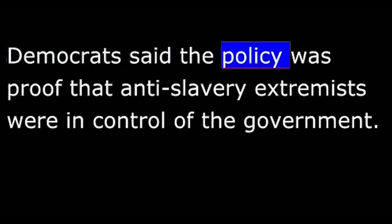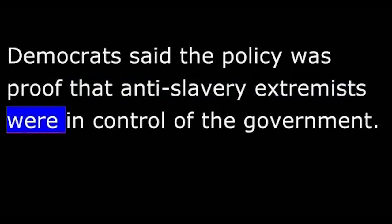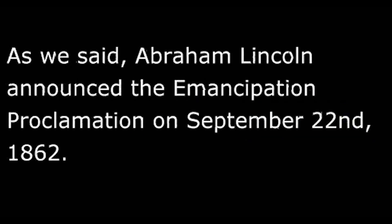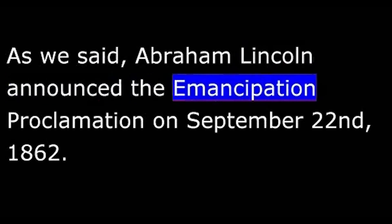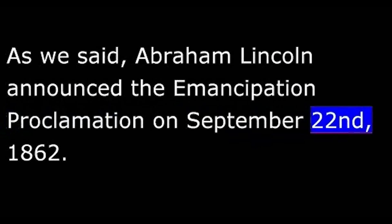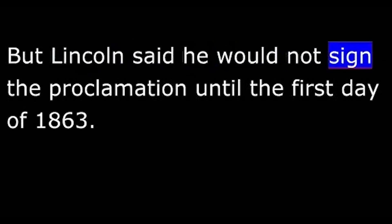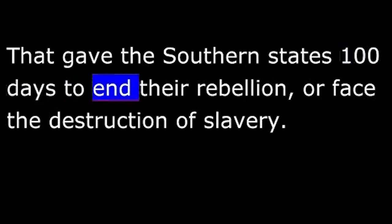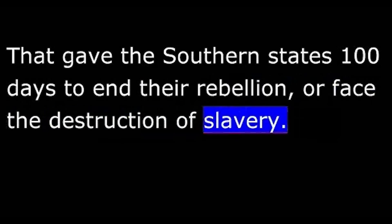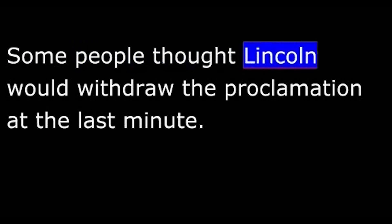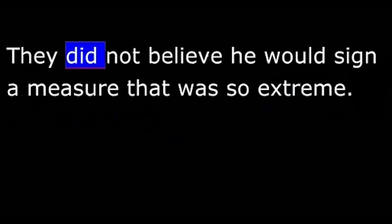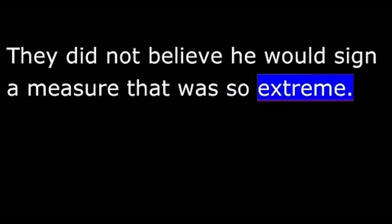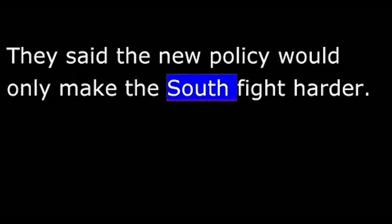Democrats said the policy was proof that anti-slavery extremists were in control of the government. Lincoln had announced the Emancipation Proclamation on September 22, 1862, but said he would not sign it until the first day of 1863 — giving the Southern states one hundred days to end their rebellion or face the destruction of slavery. Some people thought Lincoln would withdraw the proclamation at the last minute, believing he would not sign such an extreme measure, and that the new policy would only make the South fight harder and cause the Civil War to last longer.